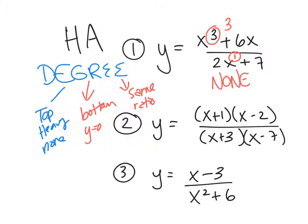So there's one of each type on here. The second one, once you foil it out, what's the degree of the top going to be? Two. Once you foil it out, what's the degree of the bottom going to be? Two. It's the same. So you take the ratio of the leading coefficients. One over one. One over one, so it's going to be y equals 1 is your answer.